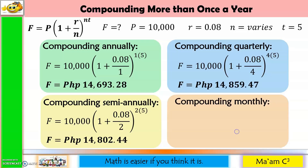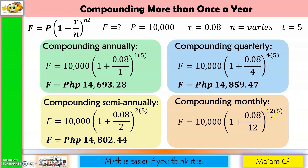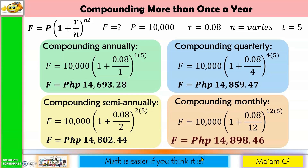Finally, compounding monthly: N is 12 because this is monthly, and the exponent NT also uses N equal to 12. This gives us 14,898 pesos and 46 centavos. More compounding gives better returns, since compounding monthly gives the biggest future value.